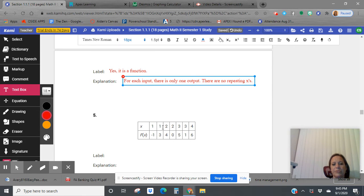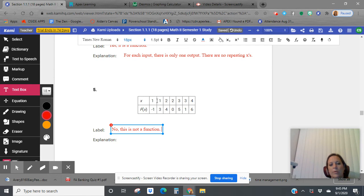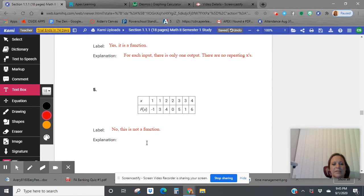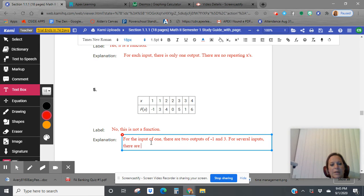Here's another table where we do see the repeating x's. This one is not a function. For each input, there is more than one output. One has this output and this output. Two has this output and this output. There are repeating x's. Several inputs, there are two outputs. So therefore, this is not a function. There are repeating x's in the table. So this is not a function.